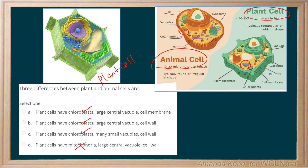Large central vacuole — you can see a plant cell has a large vacuole, a very large one. And animal cells typically do not have a big vacuole to store water. So that is correct. They both have a cell membrane, but what's distinctive about plant cells is they do have a very rigid cell wall made of cellulose.